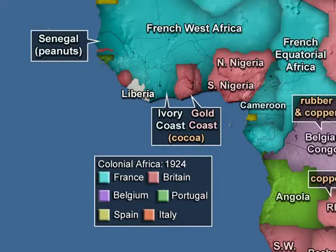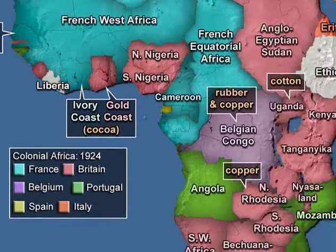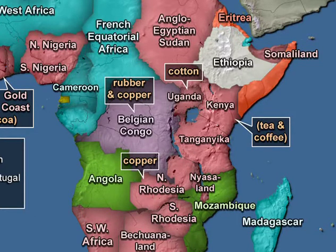Over time, territories became almost synonymous with a certain kind of primary product. Senegal becomes synonymous with peanuts. The Ivory and Gold Coasts become identified with cocoa. Kenya, synonymous with tea and coffee production. Uganda, with cotton. The Belgian Congo, with rubber and copper. Northern Rhodesia as well with copper, and so on.